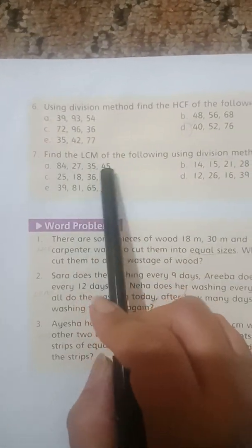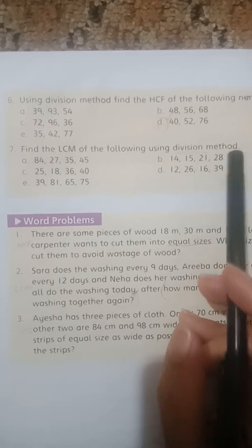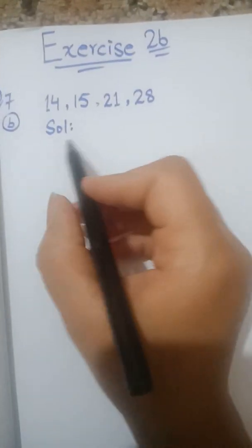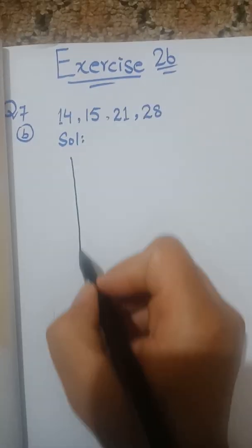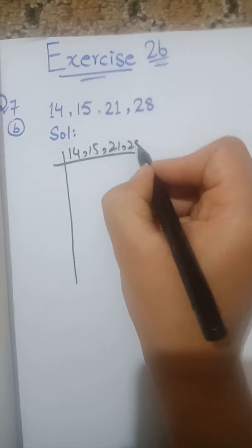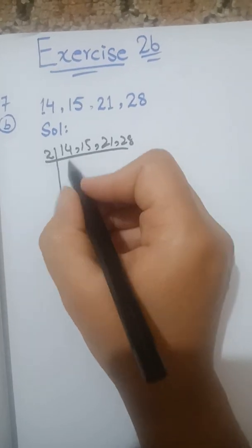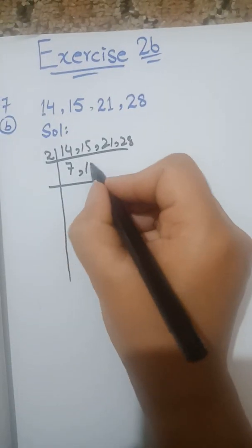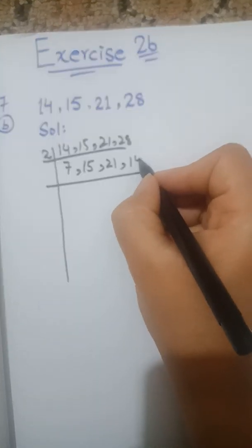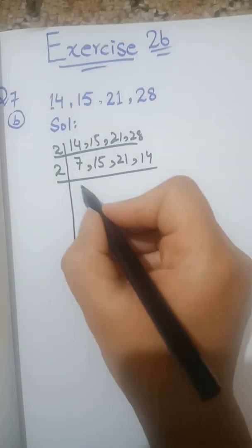Ab Exercise 2B, question number 7 — find the LCM of the following using division method. Main aapko ek do part kara deti hoon, baaki aap khud karein. Part B mein numbers hain: 14, 15, 21 and 28. Sabse pehle 2 ka table lagaayenge — 2 × 7 = 14, 15 pe nahi lagega to as it is, 21 pe bhi nahi lagega to as it is, 2 × 1 = 2, 2 × 4 = 8.